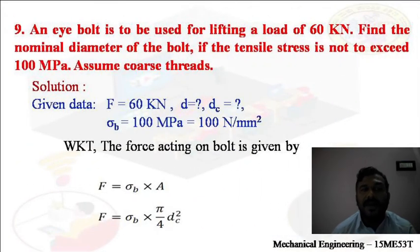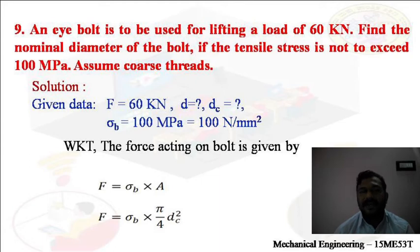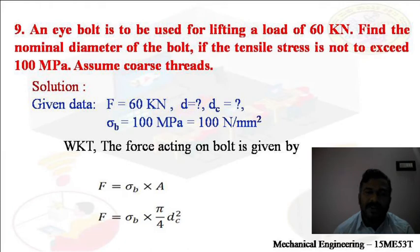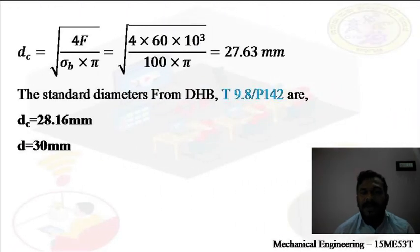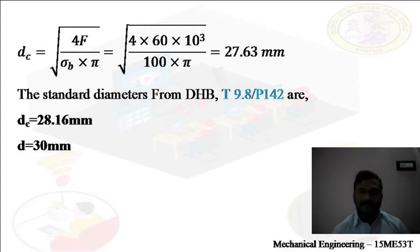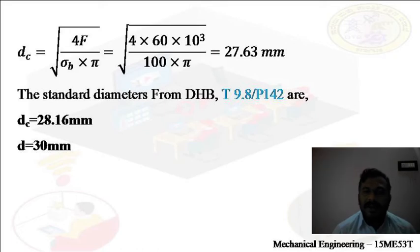The last problem: An eye-bolt is to be used for lifting a load of 60 kN. Find the nominal diameter of the bolt if the tensile stress is not to exceed 100 MPa, assuming coarse threads. F = stress × area = stress × (π/4) × dc². Substituting: 60 × 10³ = 100 × (π/4) × dc². On simplification, dc = 27.63 mm. The standard core diameter is 28.16 mm, and the corresponding nominal diameter d = 30 mm.